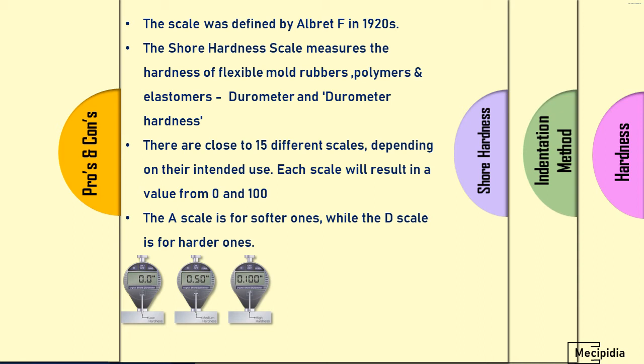There are close to 15 different scales in Shore hardness, depending on the intended use. Each scale has values from 0 to 100. Mainly we use Shore hardness A and Shore hardness D in automobile applications.